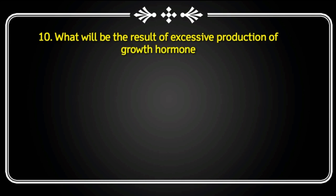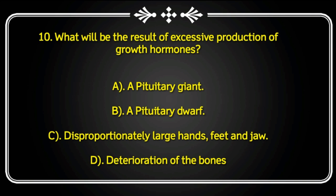Next question: What will be the result of excessive production of growth hormones? A pituitary giant, a pituitary dwarf, disproportionately large hands and feet and jaw, or deterioration of the bones? The answer is disproportionately large hands and feet and jaw.